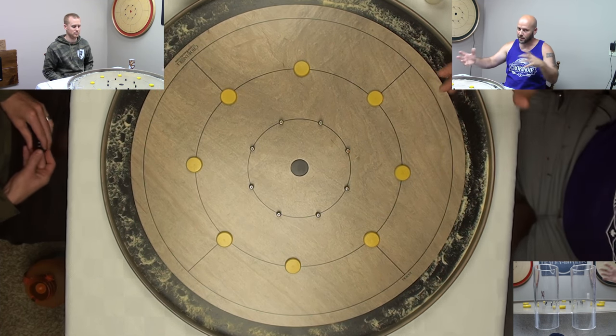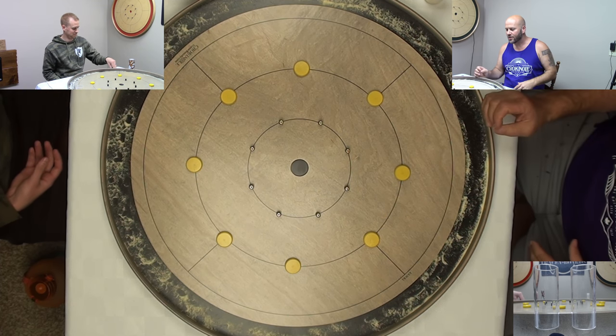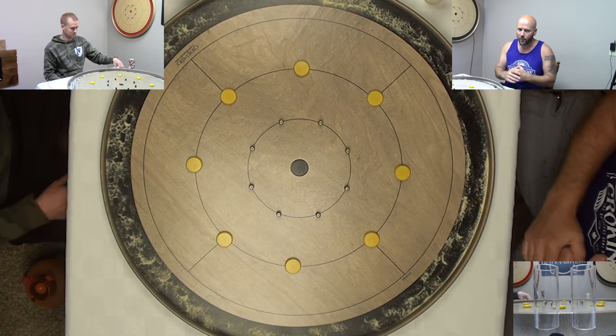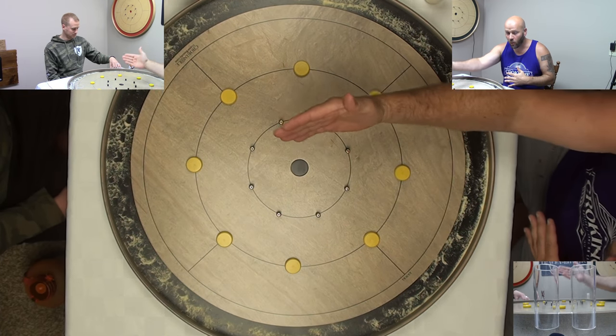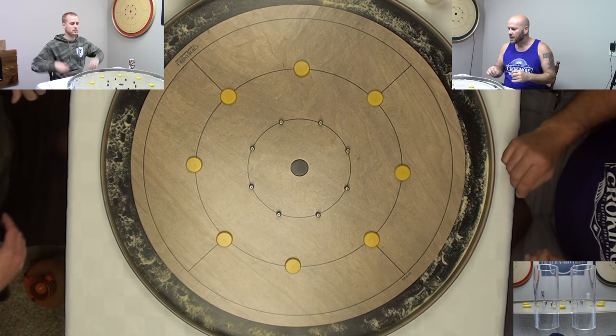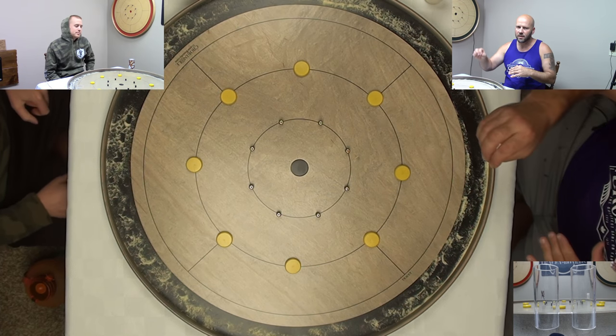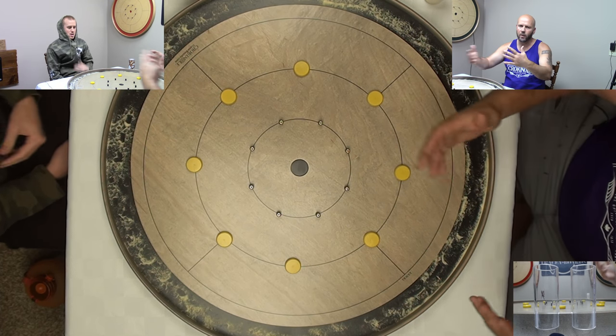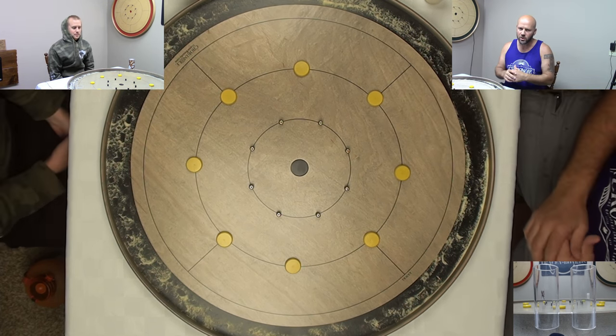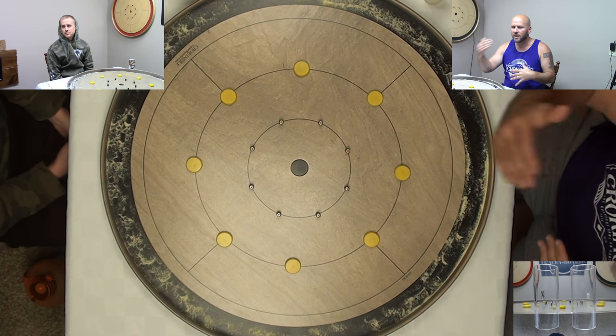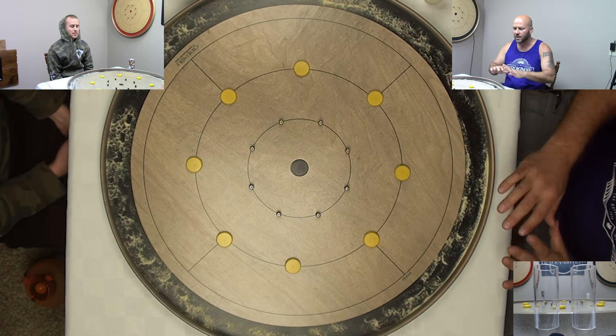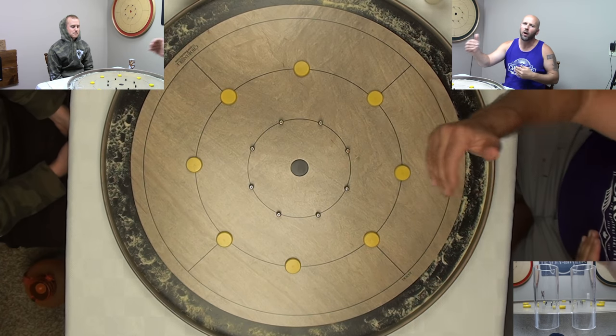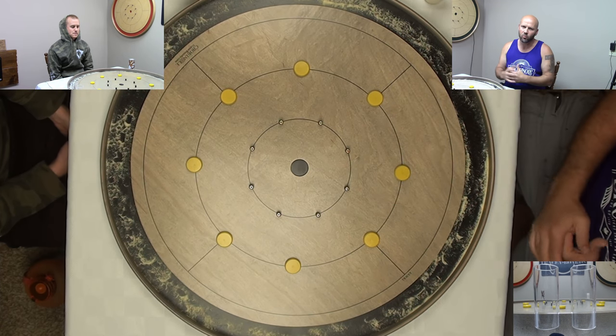So you're obviously trying to do bump and runs, but where the challenge, we practice this a little bit off camera, the challenge comes in is if you overshoot a bump and run, then you're setting your opponent up to drop a 20. The other rule that Mark suggested is that once there are three black buttons on the board anywhere, you just pull them off so things don't get too congested. And you just continue playing until all the yellows have either been knocked into the gutter or knocked into the center hole. That's when the round ends.